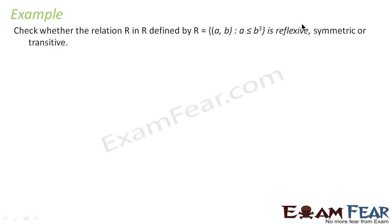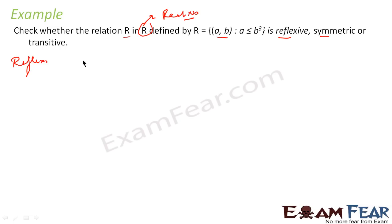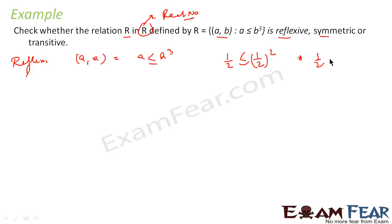We will take one more example. We have to check whether the relation R in R defined by R = {(a, b) : a ≤ b³} is reflexive, symmetric, or transitive. Note that this is similar to a previous example but here it is b cubed and the domain is all real numbers. For reflexive, (a, a) should be a member, meaning a ≤ a³. But this is not true for all values — for example, if a = 1/2, then 1/2 ≤ (1/2)³ = 1/8, which is false. So it is not reflexive.